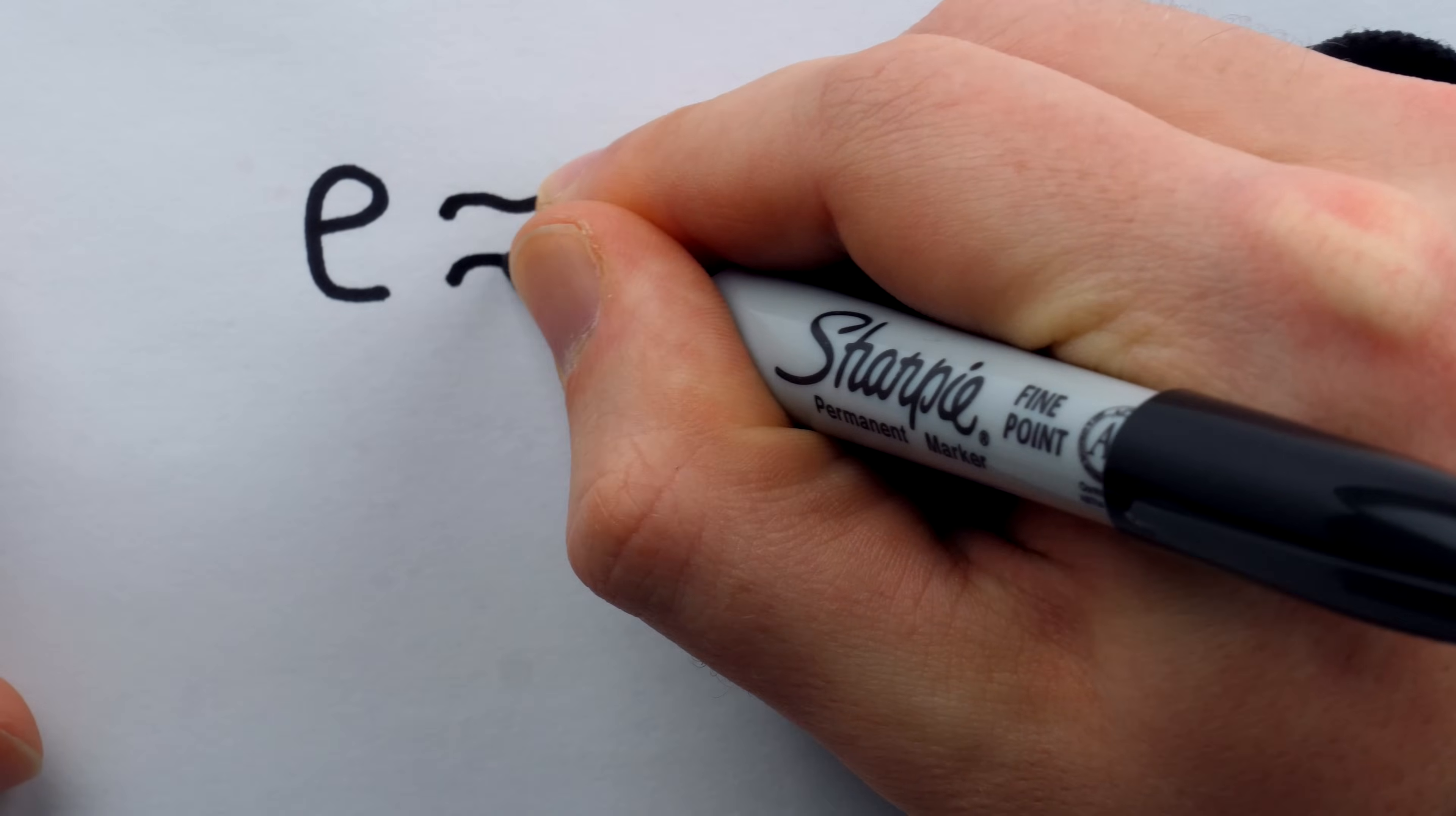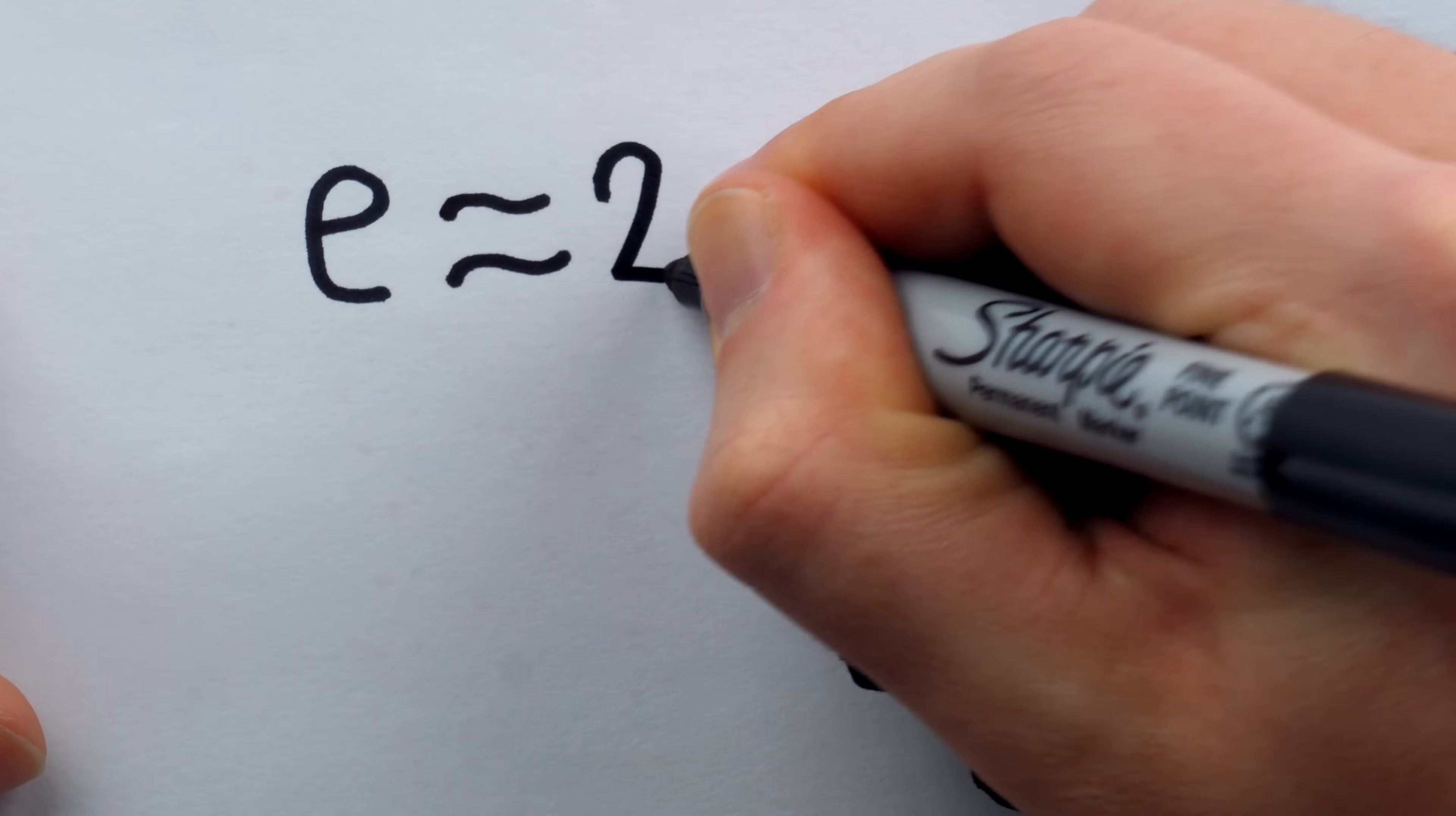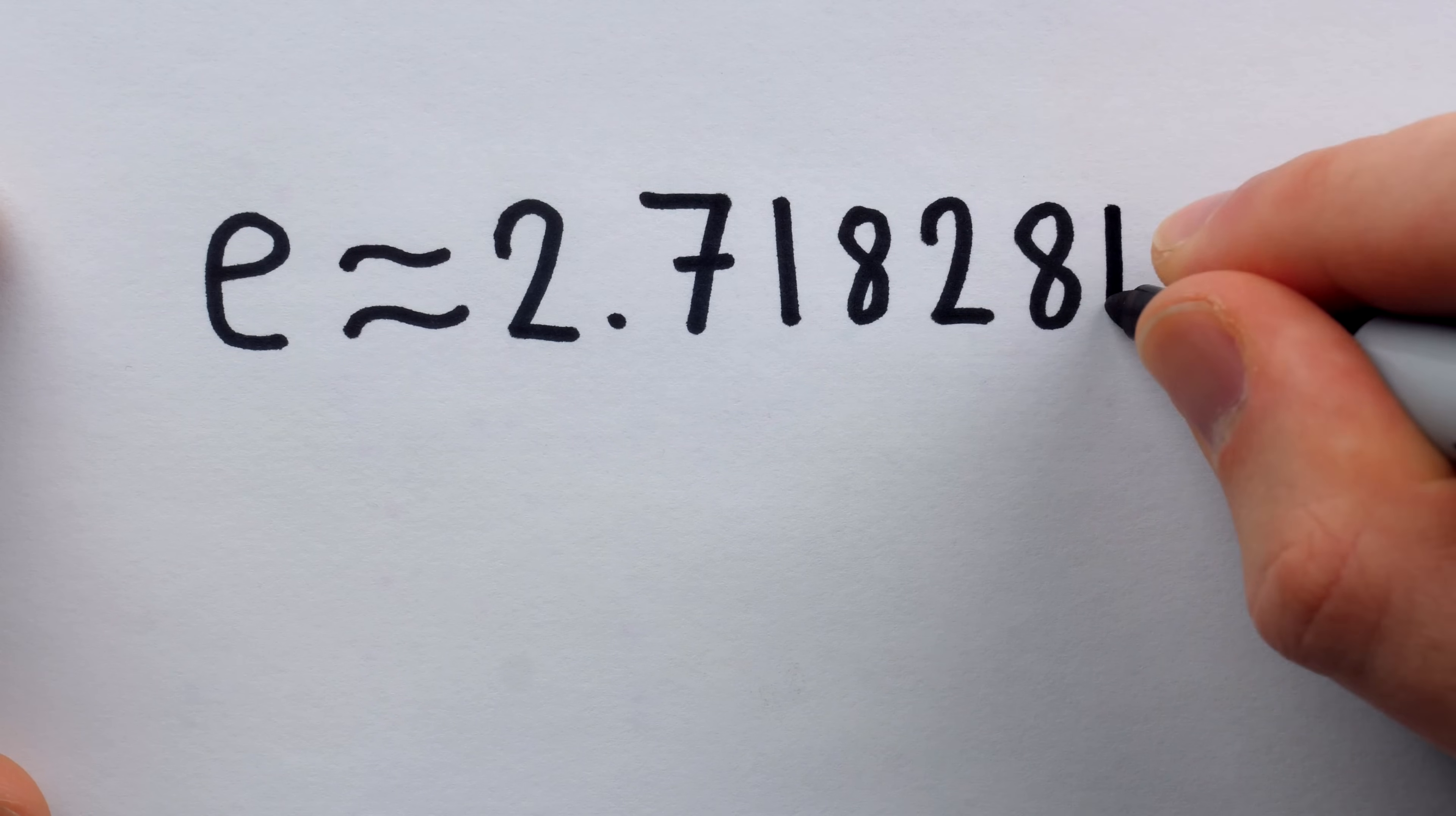Indeed, e, sometimes called Euler's number, is another one of the stars among the cast of irrational numbers.